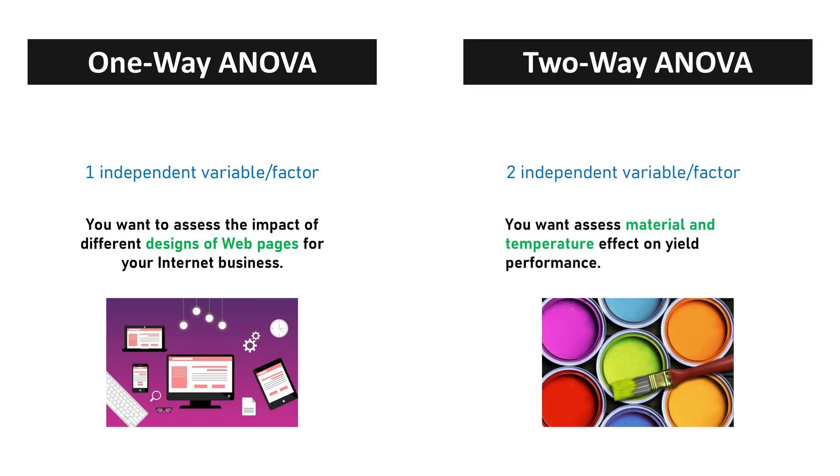The Two-Way ANOVA or Analysis of Variance is an extension of the One-Way ANOVA to analyze the means of two factors and their interaction. For example, you want to assess material and temperature effect on yield performance.